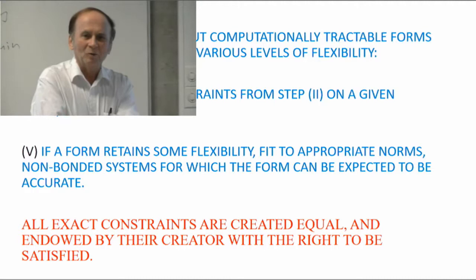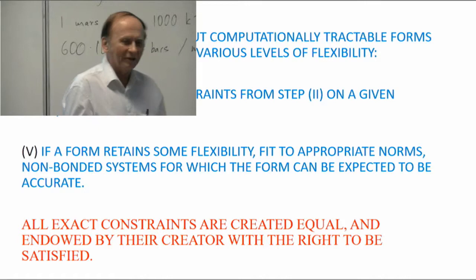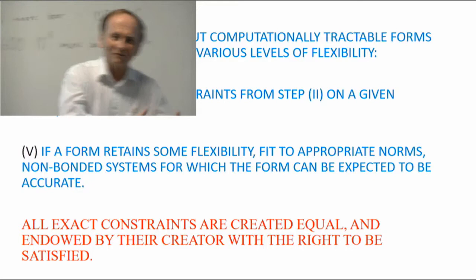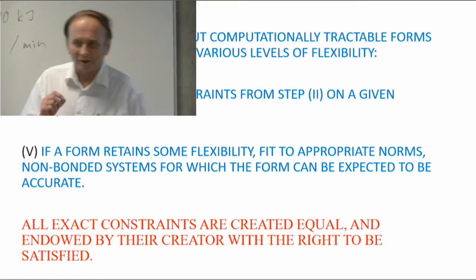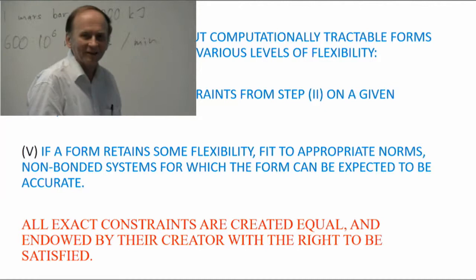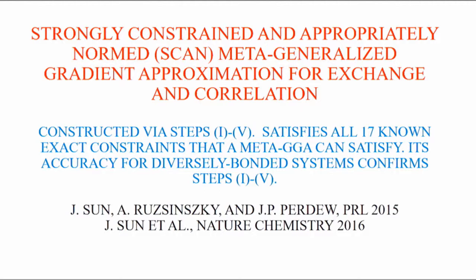The first appropriate norm is the uniform electron gas, but you could also use atoms or atoms of large atomic number to provide additional appropriate norms to determine the functional. Sometimes people ask which constraints are most important, and I can't really answer that because they're all important. When you construct the functional from the constraints, the constraints become entangled in the functional — it's a highly non-linear combination. The more constraints you have, the better the functional. I would say that all exact constraints are created equal and endowed by their creator with the right to be satisfied.